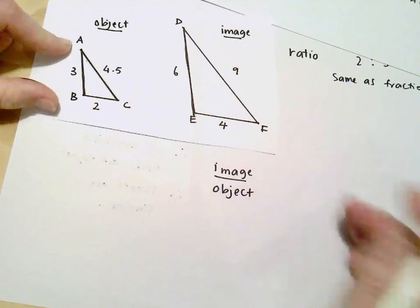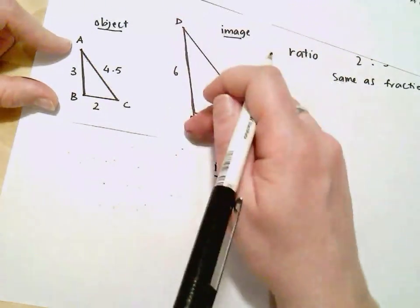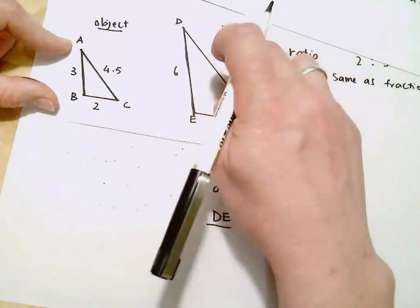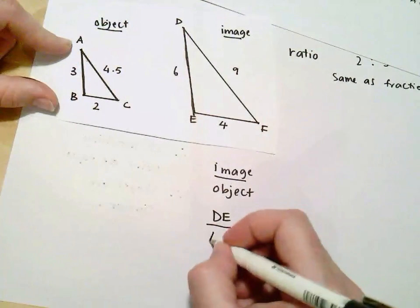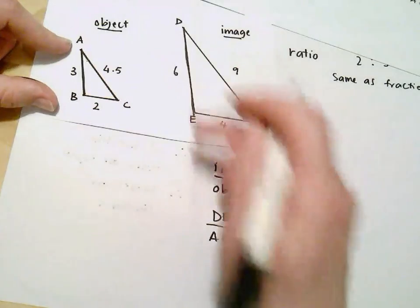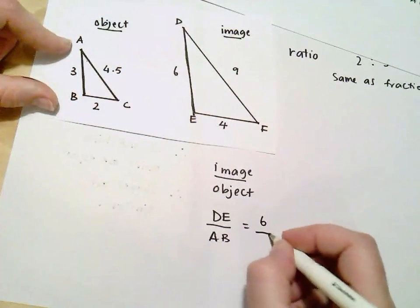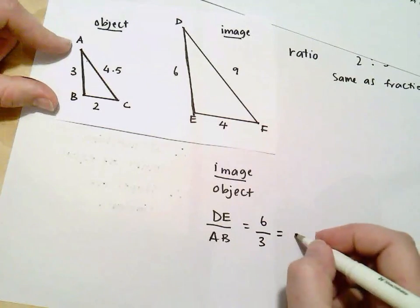So I'm looking first at the ratio of side DE in the image to side AB in the object. So side DE has a length of 6, side AB has a length of 3, and 6 divided by 3 is 2. So I've got one ratio there.